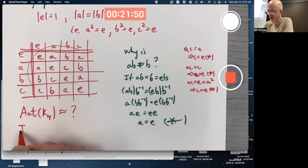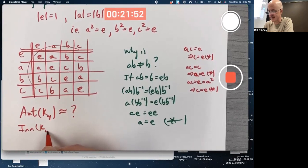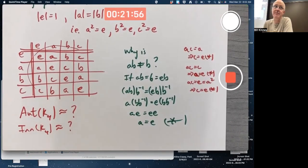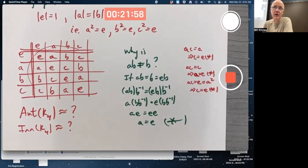Think about what the group of automorphisms of this would be. And maybe also the group of inner automorphisms. Maybe they're the same. Maybe all the automorphisms are inner automorphisms. I'm not going to say at the moment. Maybe they're not.